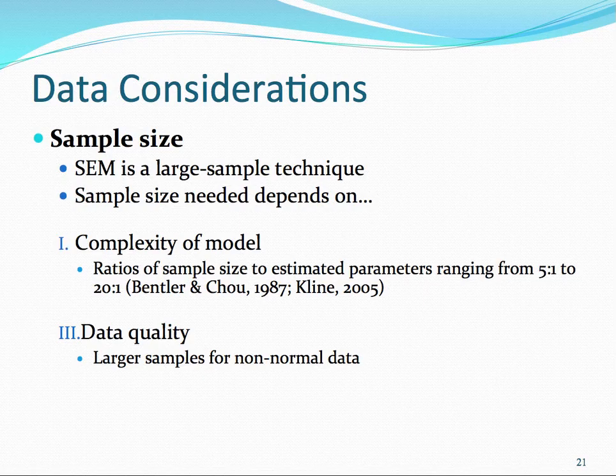A second thing to consider is the quality of our data. We would need larger samples for data that is not normally distributed compared to data that is normally distributed.